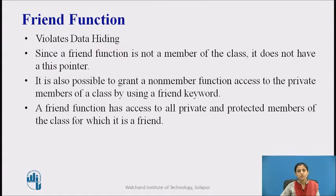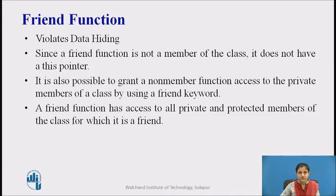One of the important features of object-oriented programming is data hiding — a non-member function cannot access an object's private or protected data. But sometimes this restriction may force the programmer to write long and complex code. So there is a mechanism in C++ to access private or protected data from non-member functions, and this is done using a friend function or friend class.